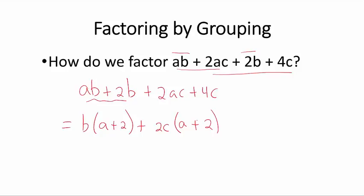Now these two terms have a common factor, namely a plus 2. So we can pull out that common factor, and what's left from the first term is b, and from the second term is 2c.